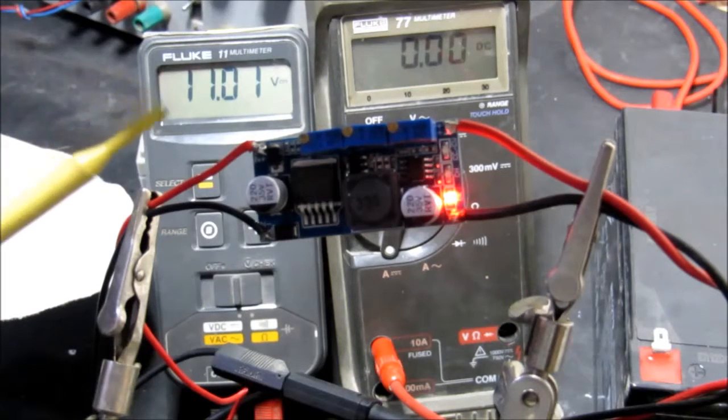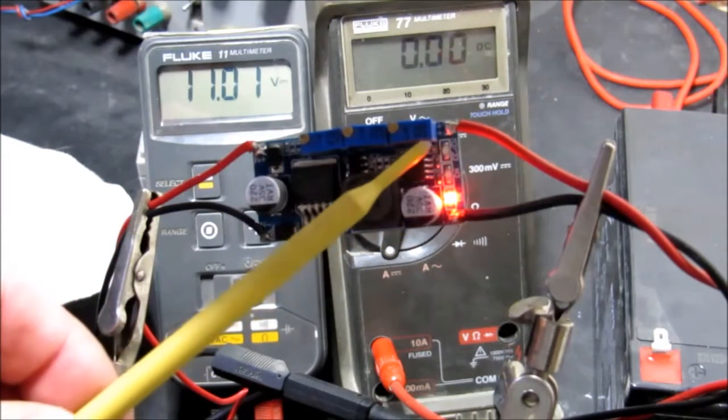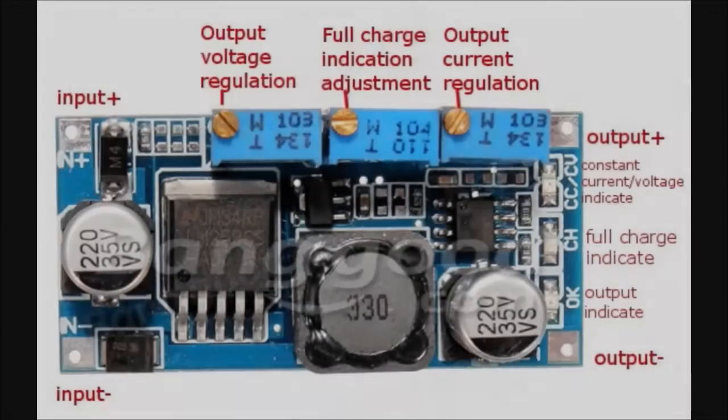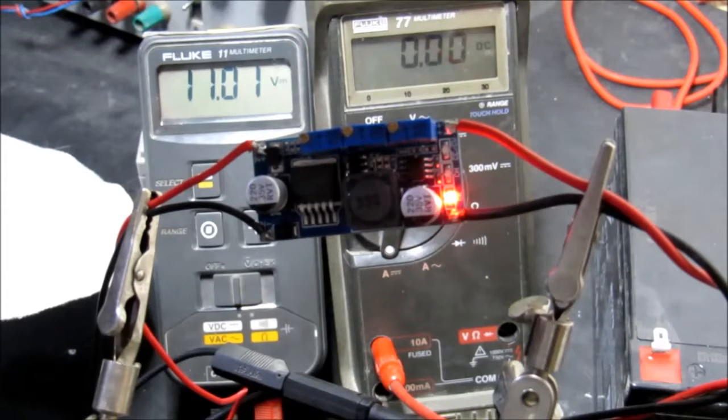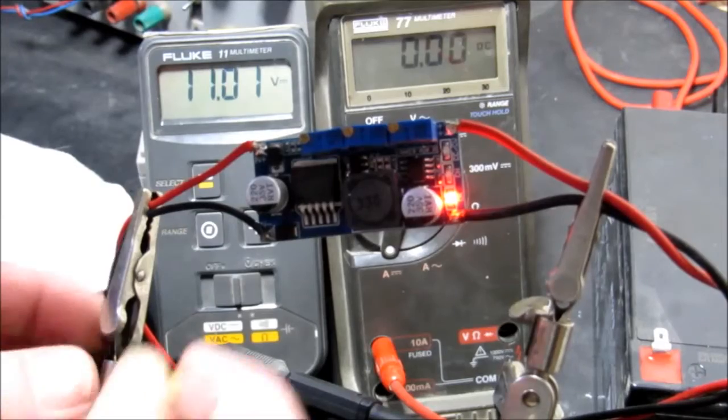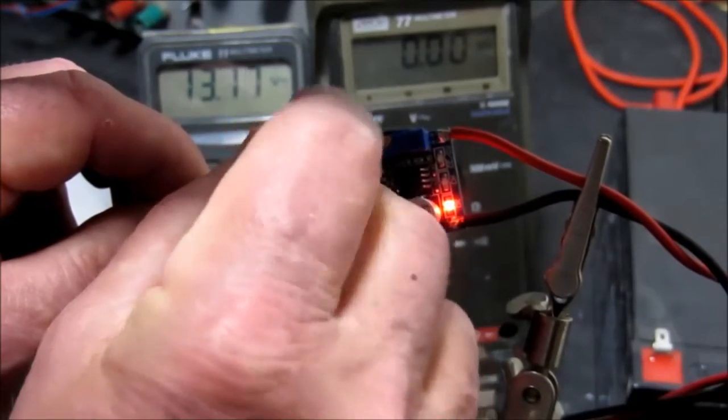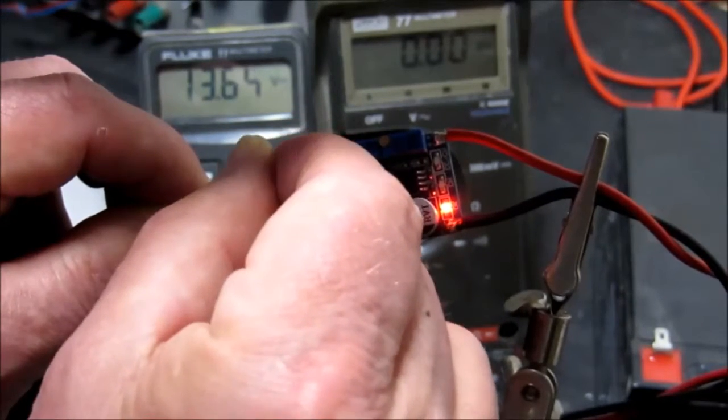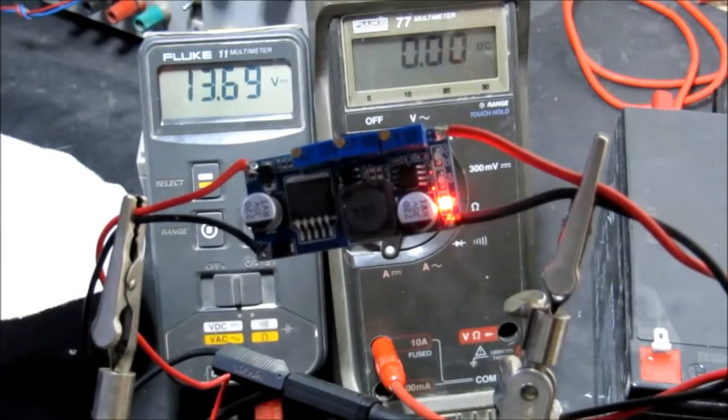I should explain that the potentiometer on the left hand side adjusts the output voltage. The one on the right hand side is used for setting the current limit, which we will see in a moment. I'm going to set this up now for 13.7 volts, so that's the meter on the left hand side. We'll see there now the voltage rising. So 13.7 volts as near as makes no difference.